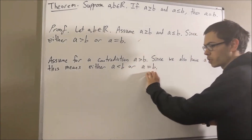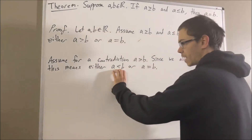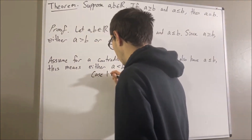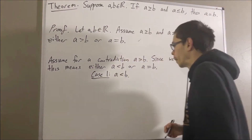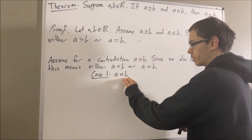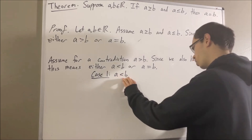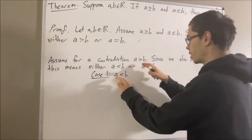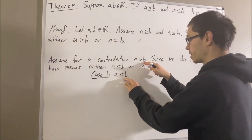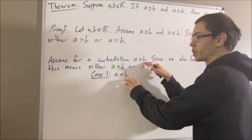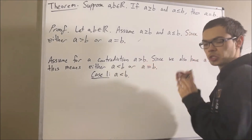Let's start with the first case, which is that A is less than B. In the case where we have A is less than B, we also know that A is greater than B. We know that these two things cannot be true at the same time, so we immediately reach a contradiction.